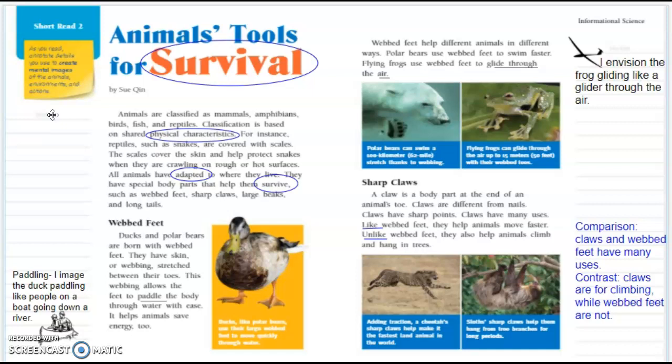Webbed feet: Ducks and polar bears are born with webbed feet. They have skin or webbing stretched between their toes. This webbing allows the feet to paddle the body through water with ease. It helps animals save energy too. And if you recall, we worked last time on Monday on forming a mental image, so this mental image of a paddling, someone paddling a boat.